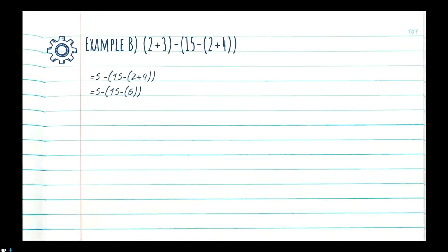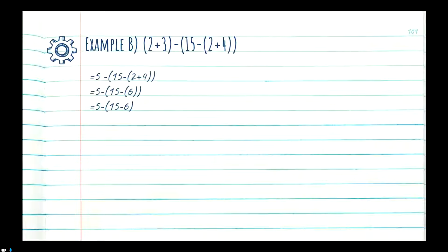Now we have a new equation: 5 minus, and then more brackets (15 minus 6). We're starting to reduce the number of brackets, cleaning it up as we go. We want to solve the contents of the brackets first, so now we have to do 15 minus 6. We bring down the 5 and the minus sign, and solve the bracket: 15 minus 6 is 9. Now we have a negative sign right next to our 9.